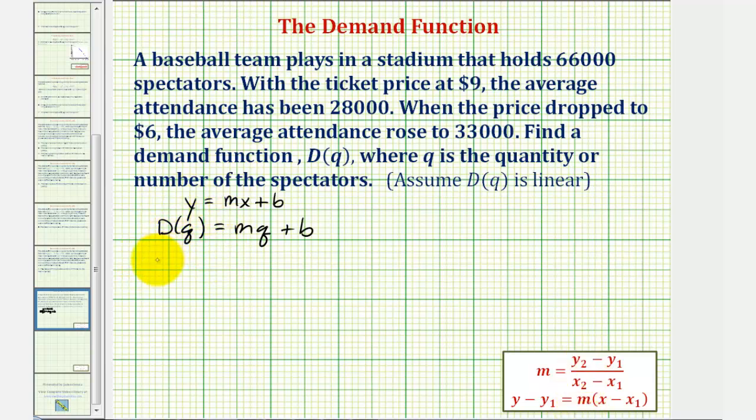But because our function is D(q), each ordered pair would be (q, D(q)) or (q, p) for price. So with a ticket price of nine dollars and the attendance at 28,000, the ordered pair would not be (9, 28000). It would be (28000, 9).